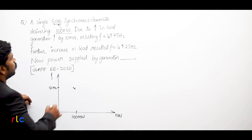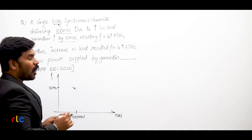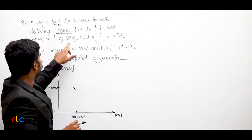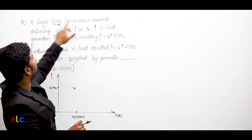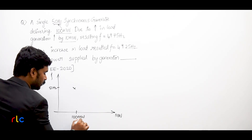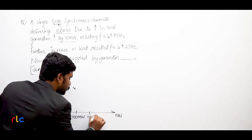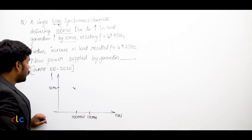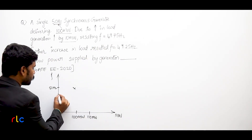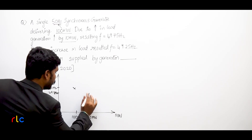Now with an increase in load, the generation is increased by 10 megawatt. Generation increasing by 10 megawatt means load is also increasing by 10 megawatt, so 100 megawatt plus 10 megawatt becomes 110 megawatt. At 110 megawatt, the frequency is 49.75 Hz, so this is our second point on the curve.